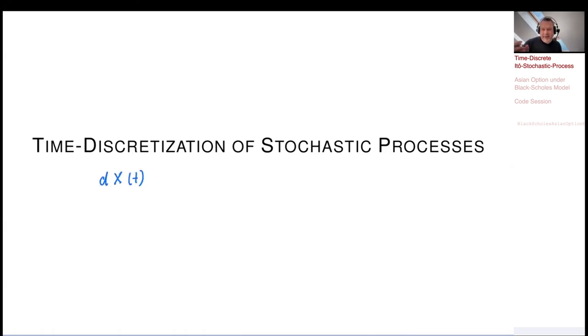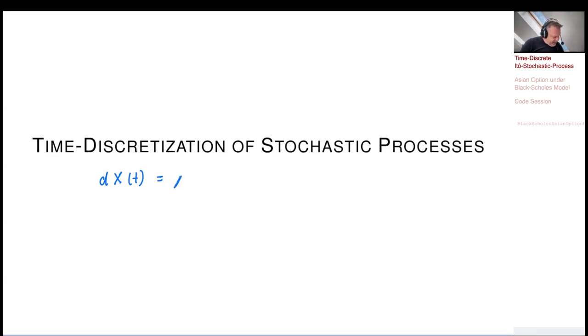This new chapter is concerned with Itô stochastic processes. What's that? If you have an Itô stochastic process, it tells you that the infinitesimal change of this family of random variables, parametrized by time, is given by some coefficients — a drift part and a diffusion part.